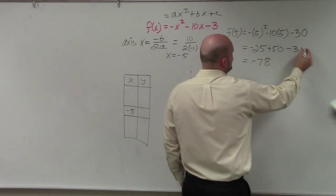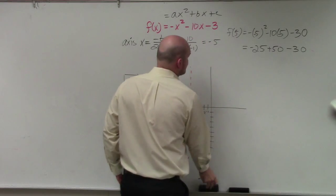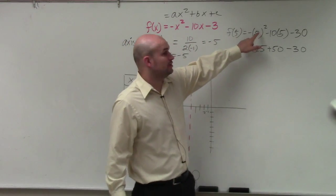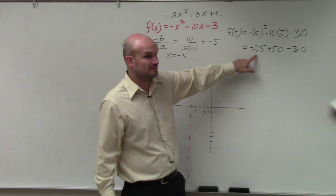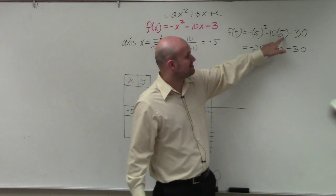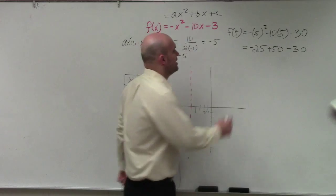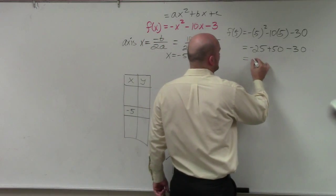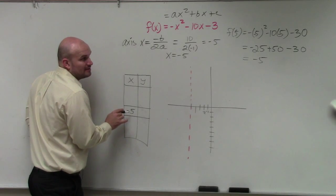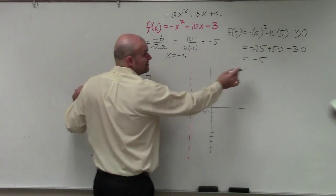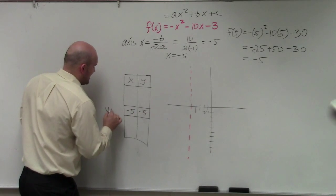So that becomes a positive. That's negative 30. All right. So never mind. Sorry about that. So that's negative 5 squared is still positive 25. Positive 25 times negative is still a negative 25. Negative 10 times negative 5 is positive 50. And then you have negative 30. All right. That makes sense. So now we know that my y-coordinate is negative 5. So when x equals negative 5, I get negative 5 out. That is my vertex.